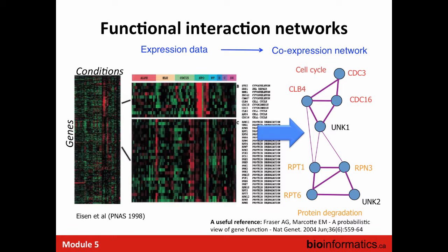You can make a functional interaction network from an expression study by measuring the correlation or similarity of expression profiles and translating that similarity into the weight on the edge between pairs of genes. In this early microarray study, they sorted genes by similar expression profiles using hierarchical clustering, and you can see that genes with similar profiles have the same annotated function — the text looks similar because those genes all share the same function.